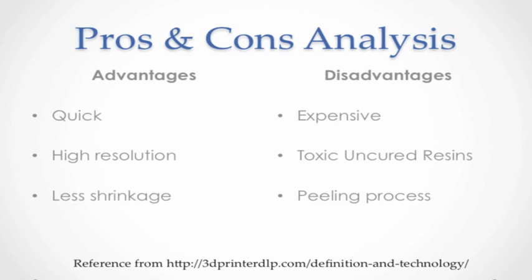For the advantages, the DLP process is quick because the projector can cure an entire layer at once by projecting the cross-section image. This is much faster than SLA, where the laser has to selectively scan the cross-section area one line at a time. The resolution of DLP is very high because projector technology has been developed for a long time. Another advantage is less shrinkage, because curing the entire section at once avoids the situation where one side is cured and the other is not.